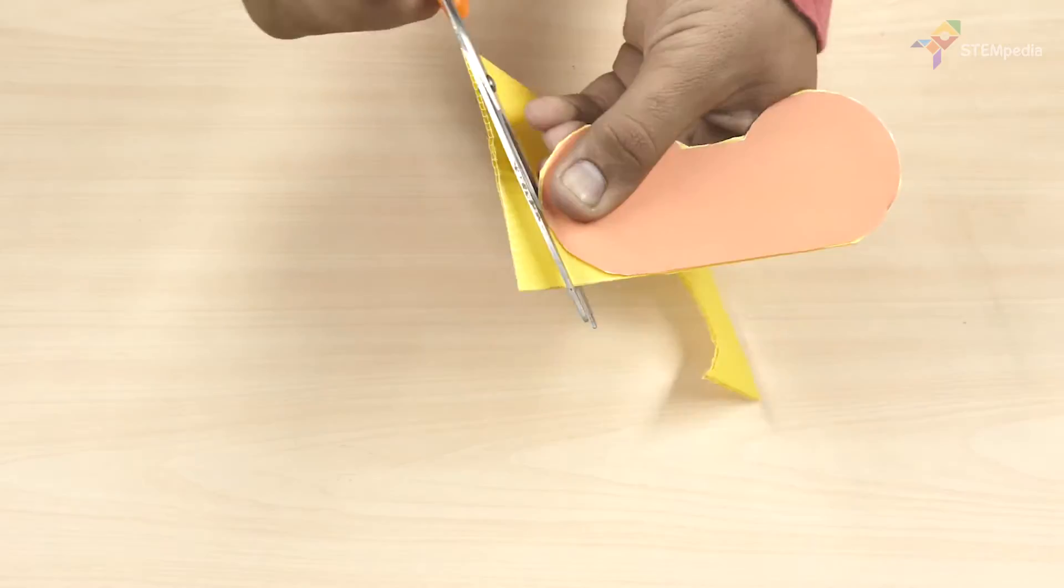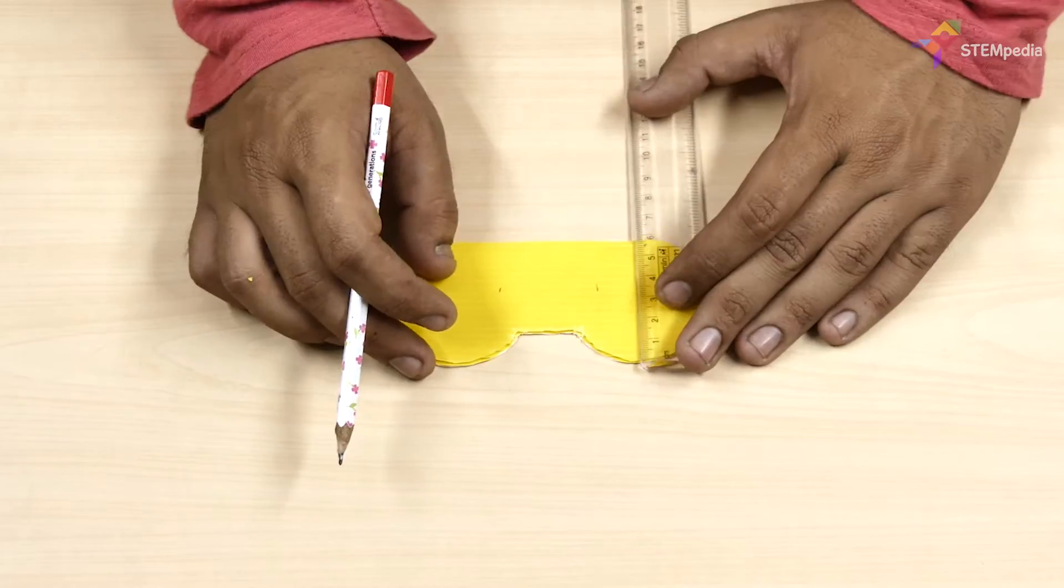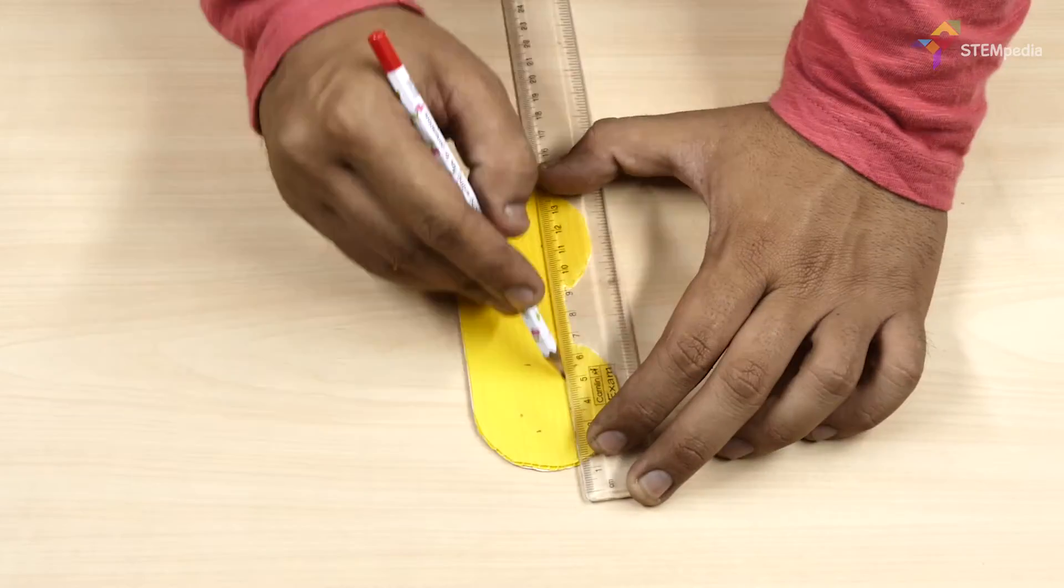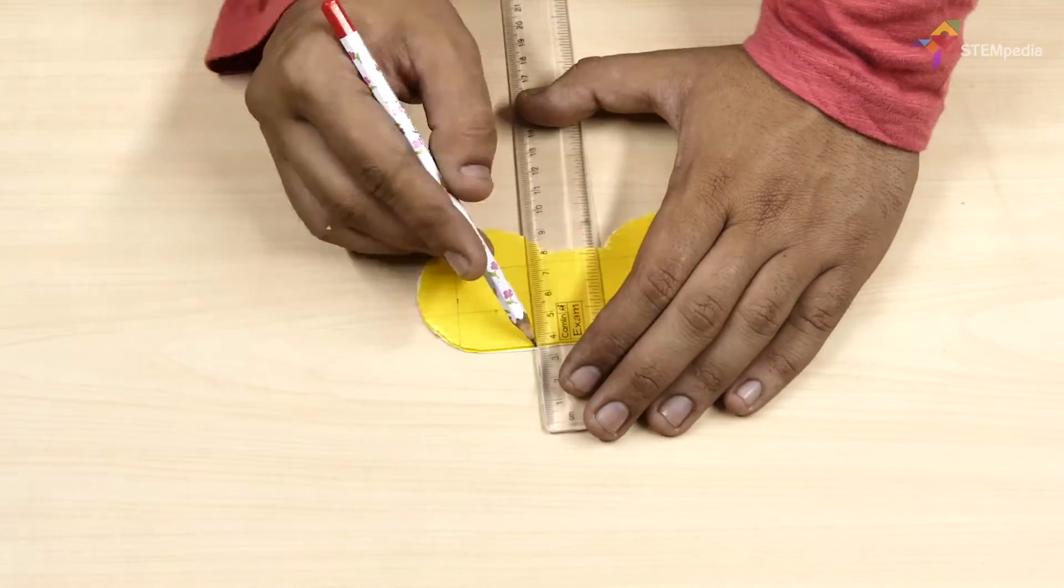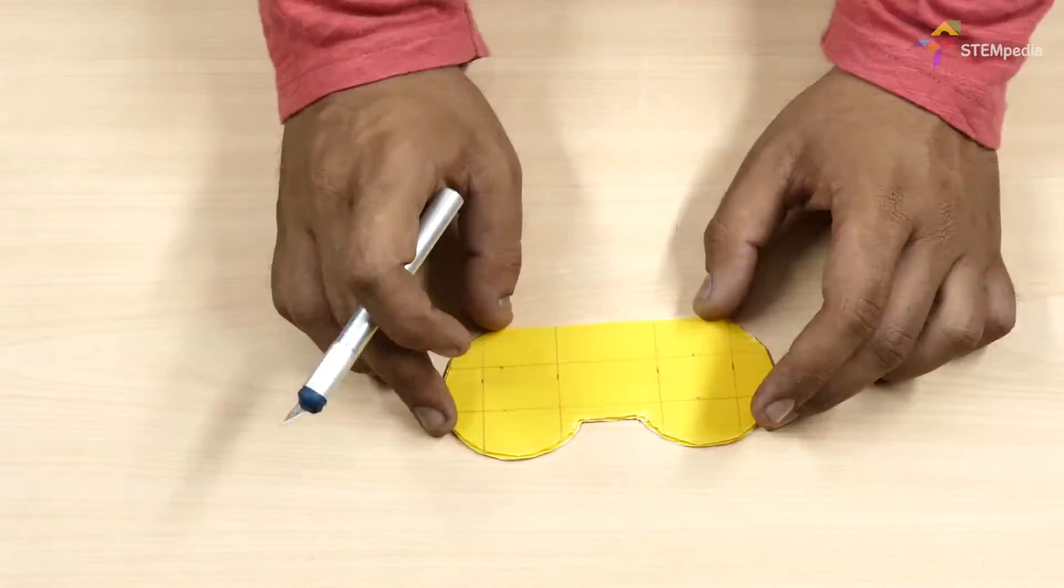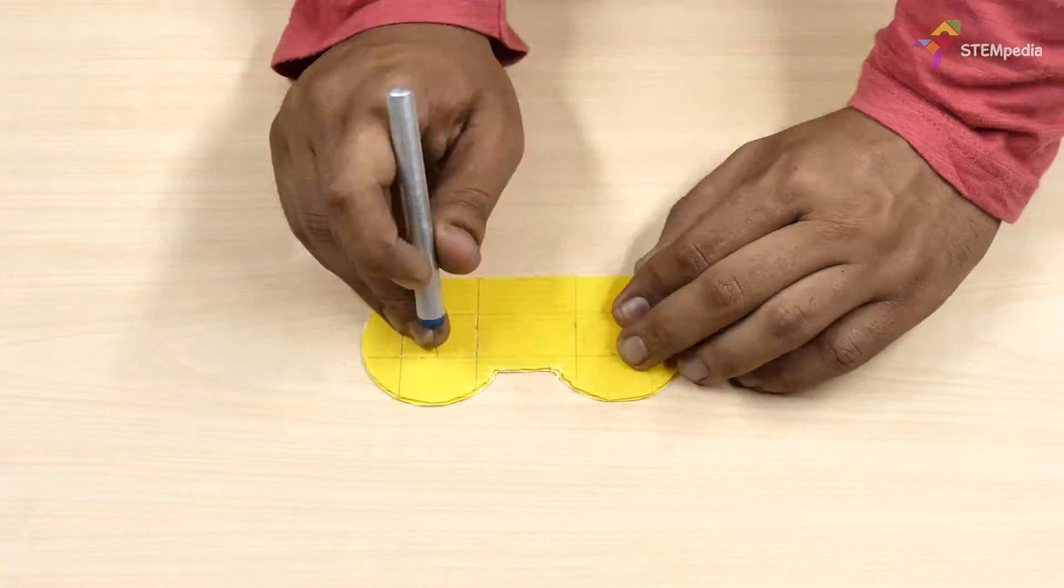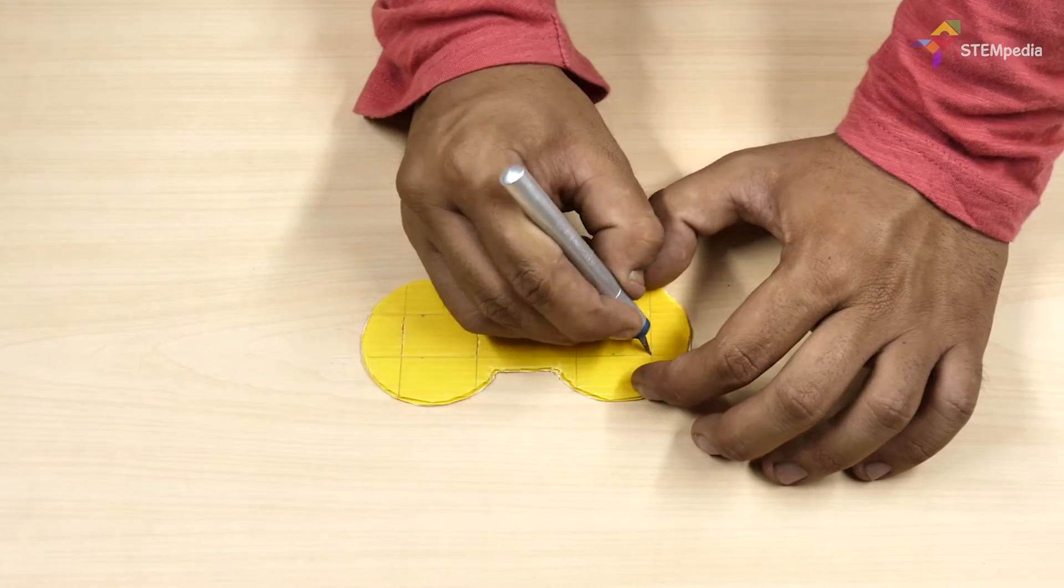Flip the cutout for making the markings to hold the joysticks. Leave 2cm from the bottom and sides and draw two rectangles of 2cm x 2.5cm. Next, cut out the rectangles.